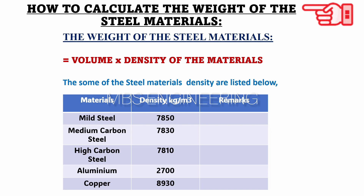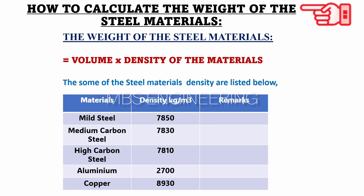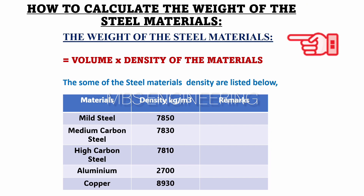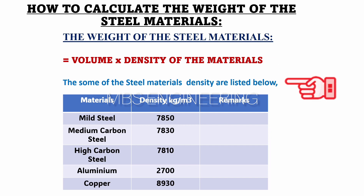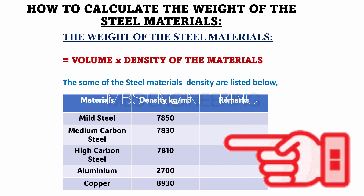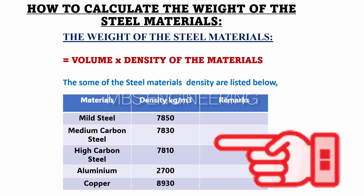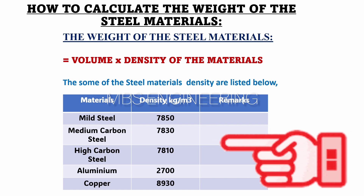Next, we learn about how to calculate the volume and weight of mild steel materials. The weight of mild steel materials can be calculated by multiplying the volume of the material by its density. For a better understanding, here are the densities of some commonly used materials: mild steel, medium carbon steel, high carbon steel, aluminum, and copper.